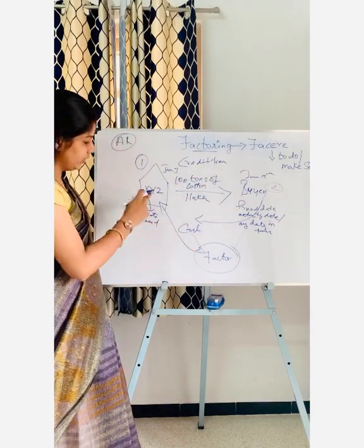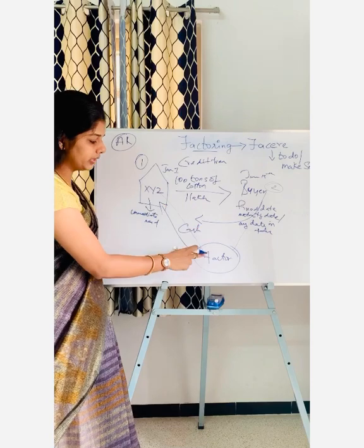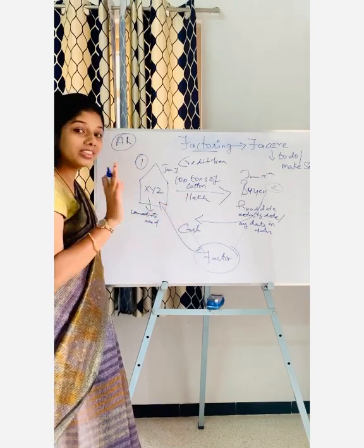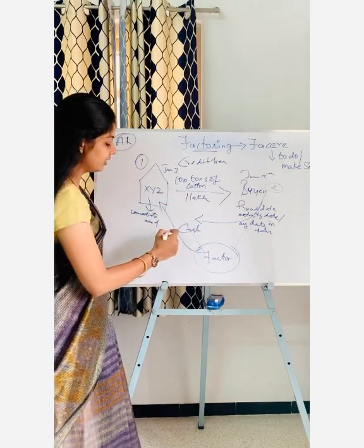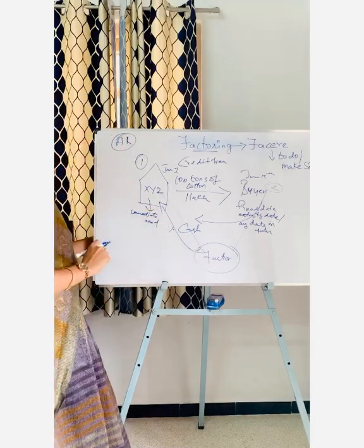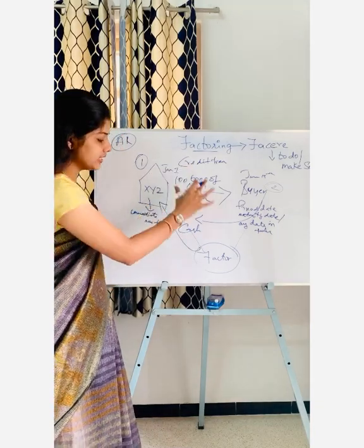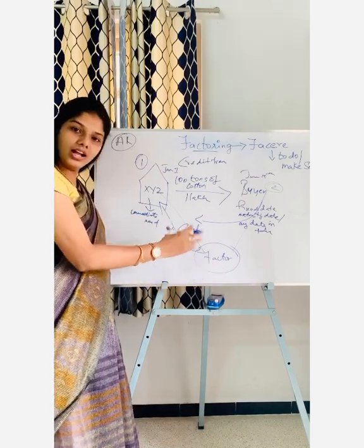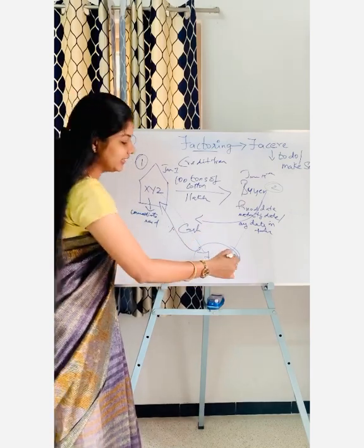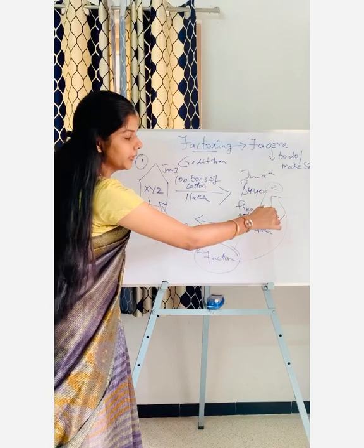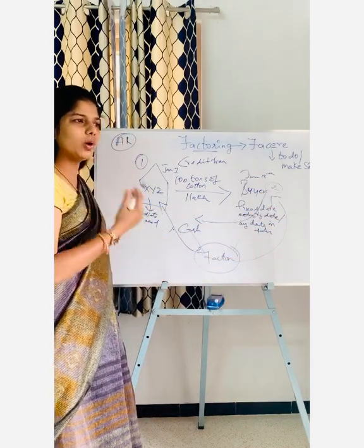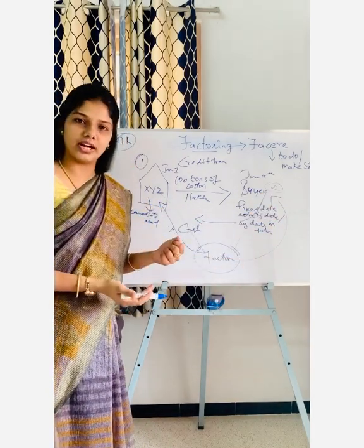The factor will immediately give cash. For example, if the transaction is worth one lakh, the invoices will be given to the factor and the factor will give back the one lakh with a discount. The factor gives back the money with a discount, and then it becomes the headache of the factor to collect the cash from the buyer. This entire process is called factoring.